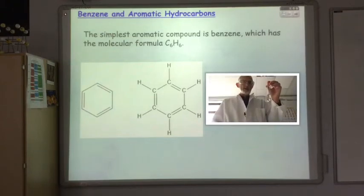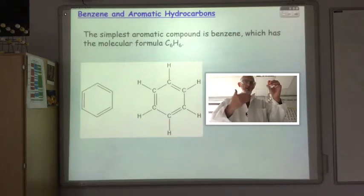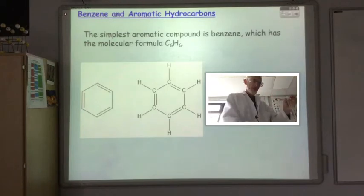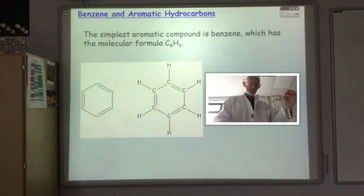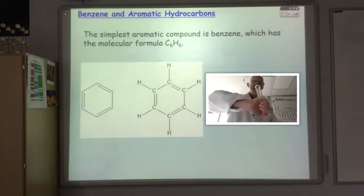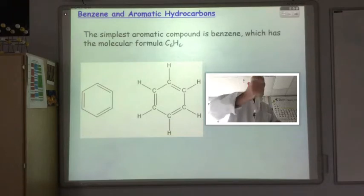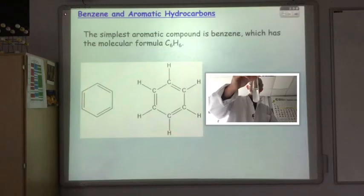Here I've got some cyclohexene, a ring of six carbon atoms with a single carbon-carbon double bond. If I add some bromine water to it and give it a shake, we see that the bromine water has been decolourised as you expect since the cyclohexene contains a carbon-carbon double bond.